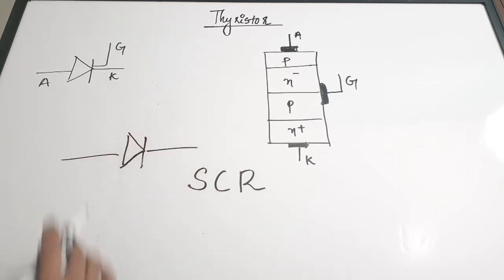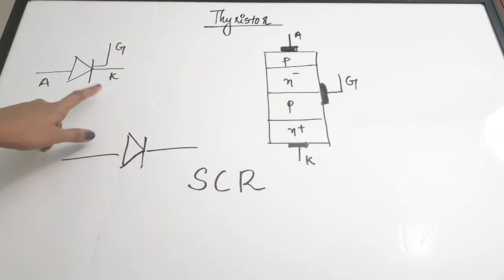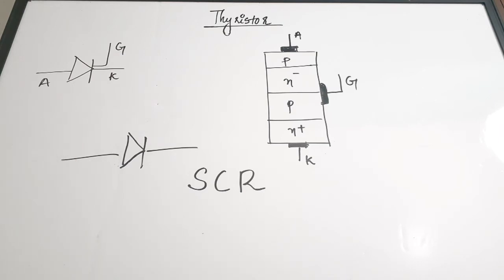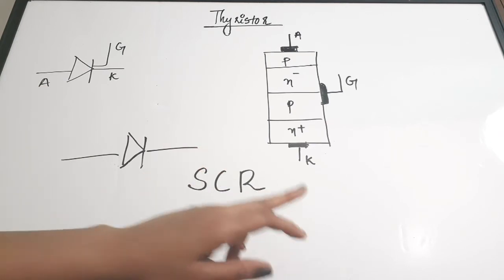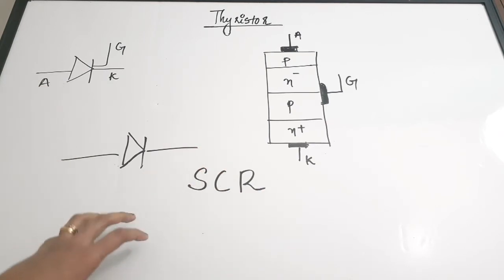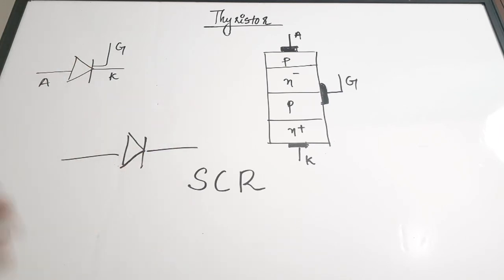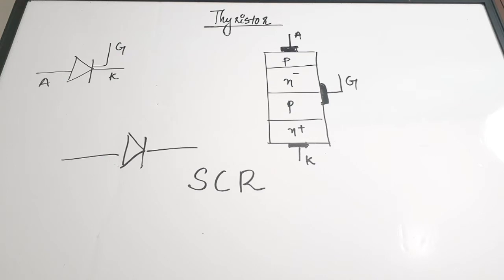What makes the SCR different from a normal diode is the gate terminal. A normal diode has only an anode and a cathode, but if you observe the symbol of a silicon controlled rectifier, there is a gate terminal as well — a controlling factor. This is why it is called a silicon controlled rectifier. In this video we will discuss the basics of the SCR and its types.